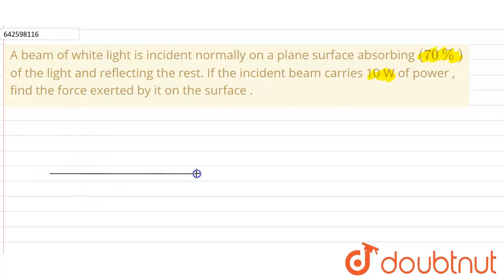We have been given a beam of white light incident on the plane surface. So let us suppose this is our plane surface, this is the incident light, and this is the reflected light.